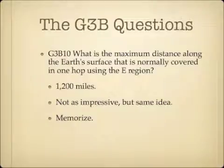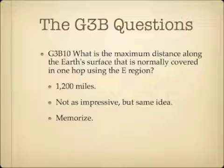What is the maximum distance along the Earth's surface that is normally covered in one hop using the E region? The E region will generally bounce your signals about 1,200 miles in one hop. It's not quite as impressive as the F2 region, but it's the same idea. This is another question you should memorize.